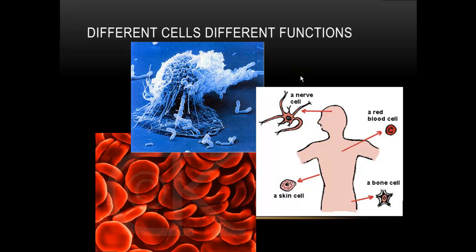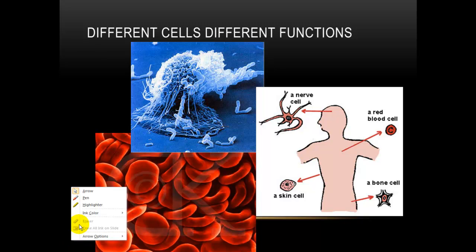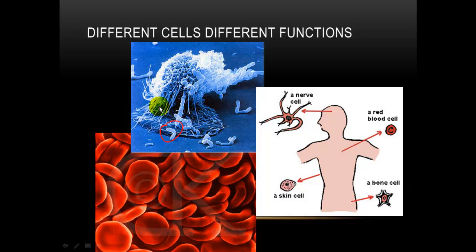Last thing here, we're coming to the end. We also need to wrap our mind around the idea that different cells are going to have different functions in our body. We're looking on top at a white blood cell. Its function is to seek out and destroy invaders. So, it is phagocytic. It can undergo phagocytosis.